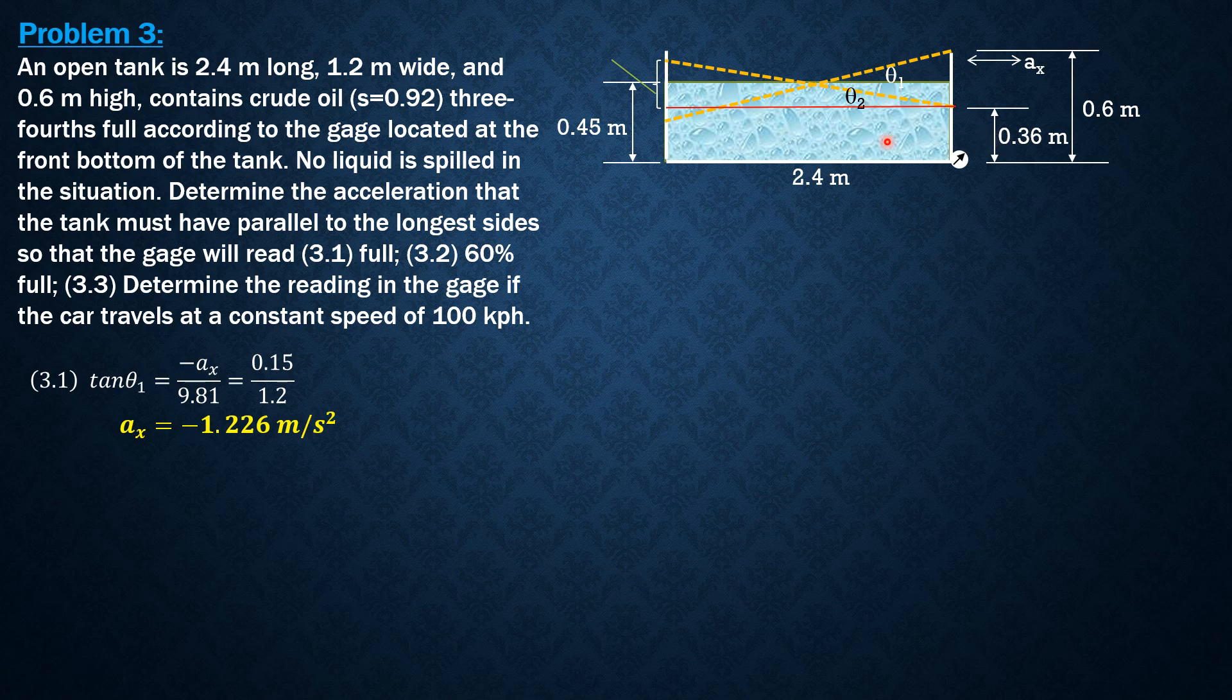So tangent of theta 2 equals Ax—this time the acceleration is positive, it should be rightward so that the crude oil surface would look like that—and it is equal to tangent of theta 2 is Ax over G.